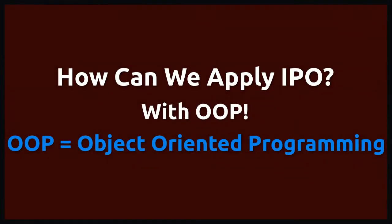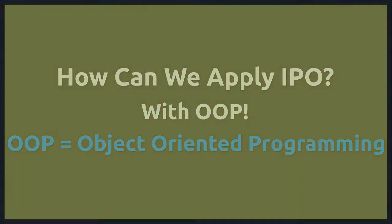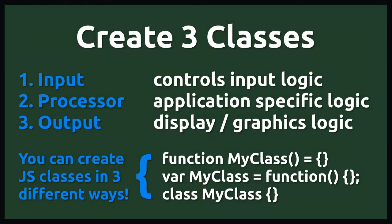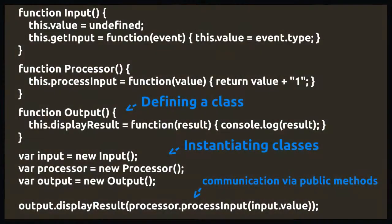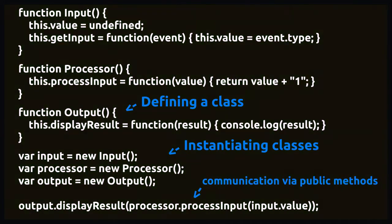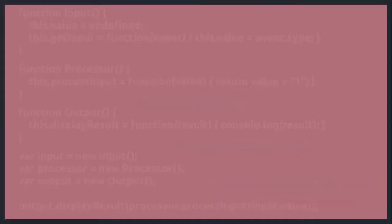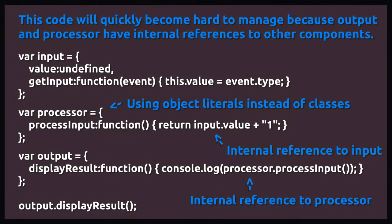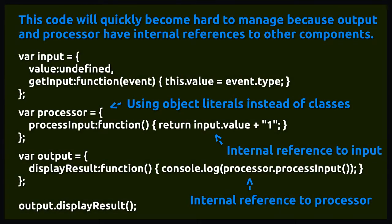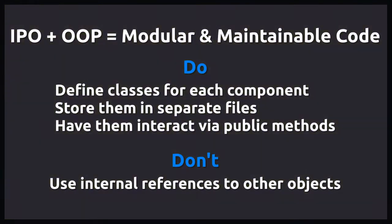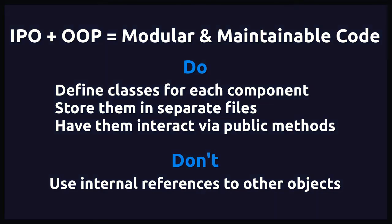Now let's apply this physical relationship between computer hardware components to our code with some object-oriented programming. You would create a class for each component and store it in a separate file — one to handle the application's user input, one to process that input, and one to handle displaying the result on screen. Each class would have public methods and interfaces allowing them to interact with each other, but none of them would ever have an internal reference to an instance of another component. That would be the hardware equivalent of hardwiring your keyboard to your computer — not only is it harder to maintain, but now you can't use that keyboard with another computer. Instead, keyboards have plugs and computers have ports, and our classes should only interact via their public methods.